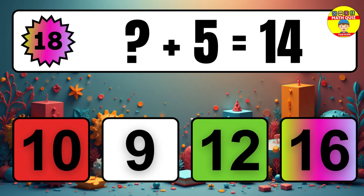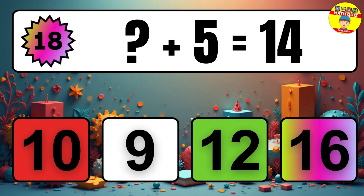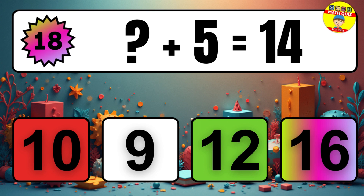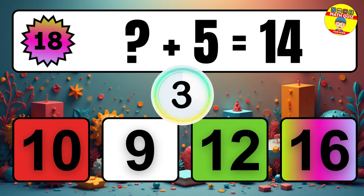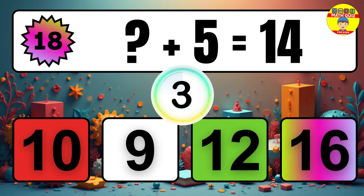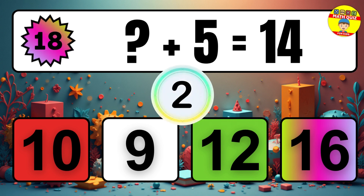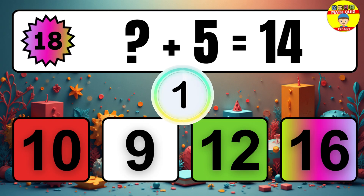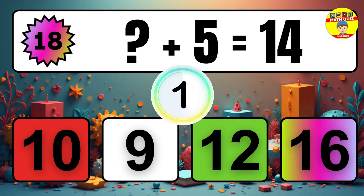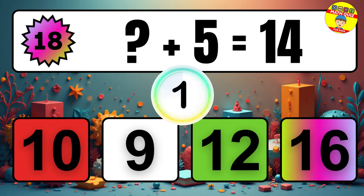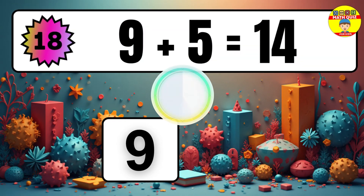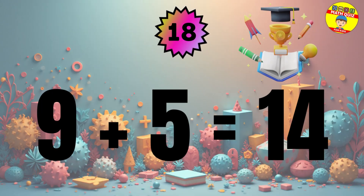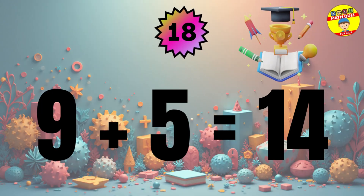Question 18. What number plus 5 equals 14? The missing number is 9.